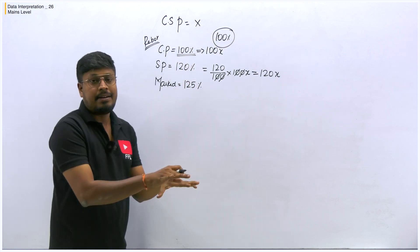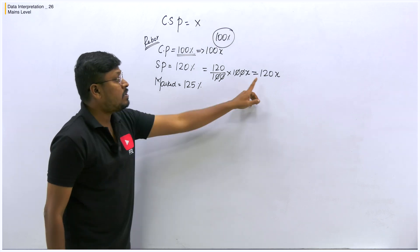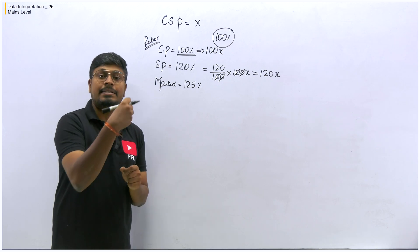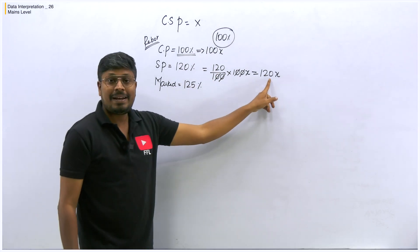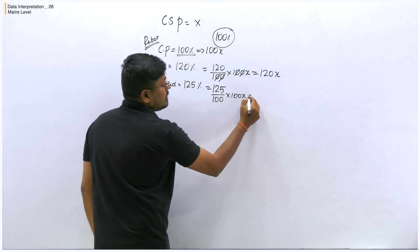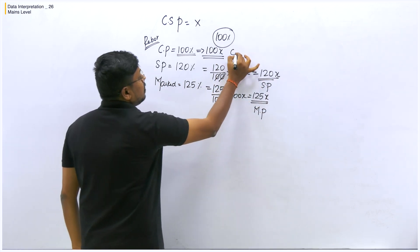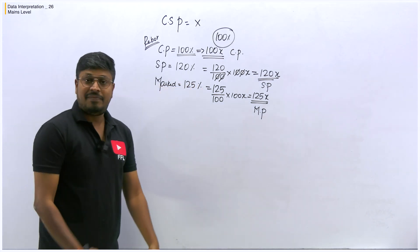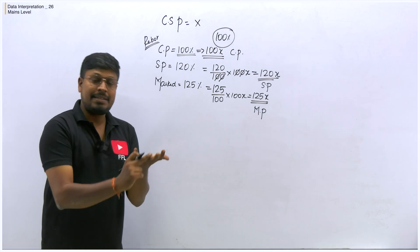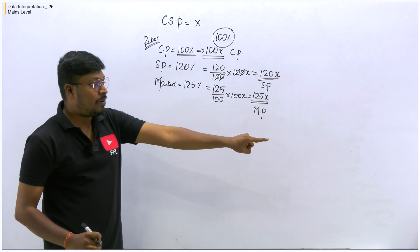Some students ask: can I fix it as 100? Don't fix it as 100 — fix it as 100x, since we don't know the exact cost price. With cost price as 100x, selling price becomes 120x and marked price becomes 125x. We don't yet have the exact values — we need the table chart discount to find them.